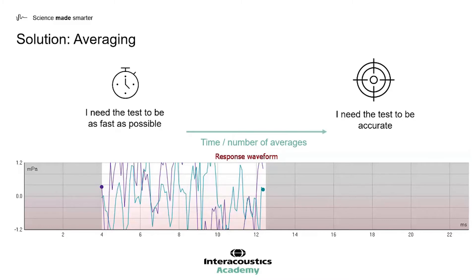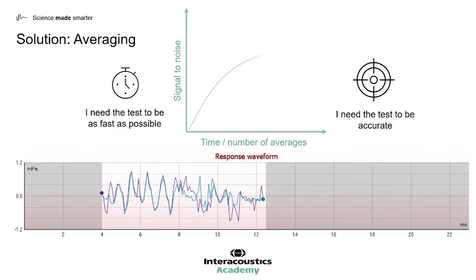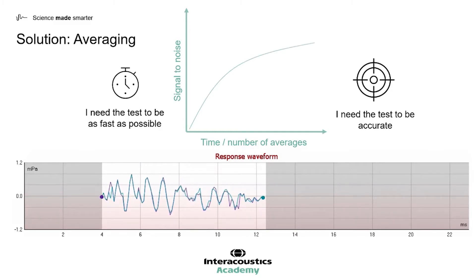In transient OAE measurements we do this by presenting a number of clicks into the ear. This can be seen in the image below, with the waveform becoming more consistent, the noise being reduced, and with the OAE being present within this waveform.